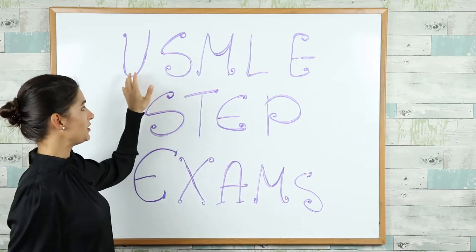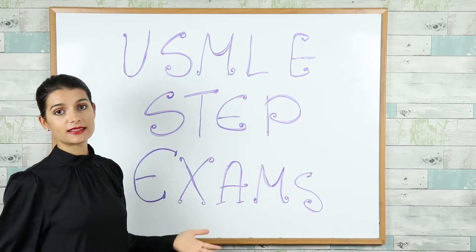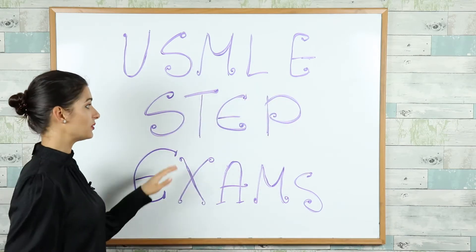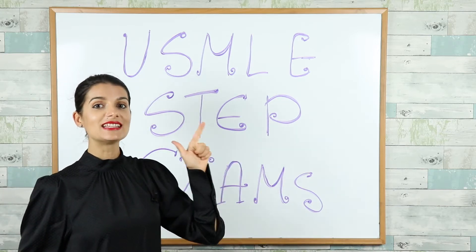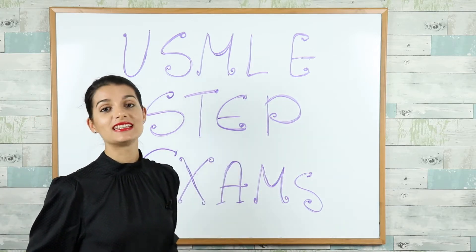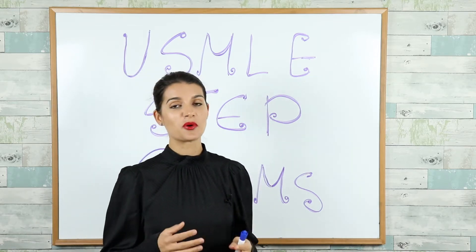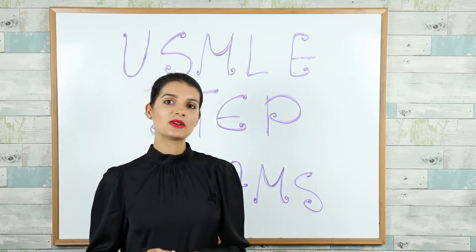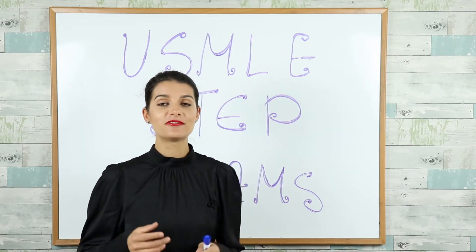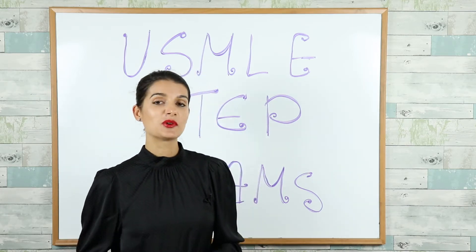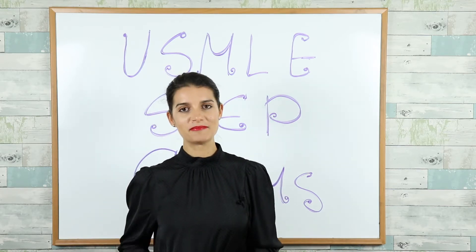USMLE stands for the United States Medical Licensing Examination, and the tests themselves are called the step tests. You have to climb three steps: step one, step two, and step three — three tests you have to pass and score very high on. Technically there are three exams, but in reality more like five, because step two and step three have two parts each.